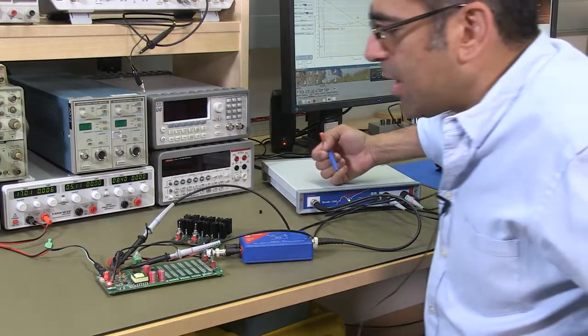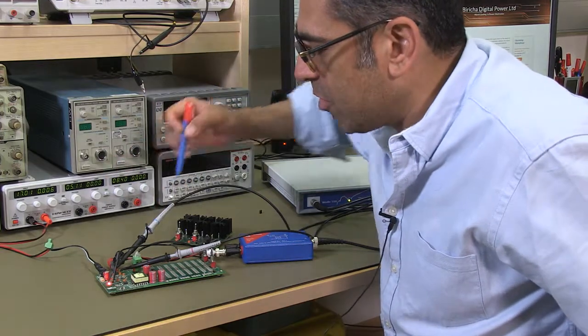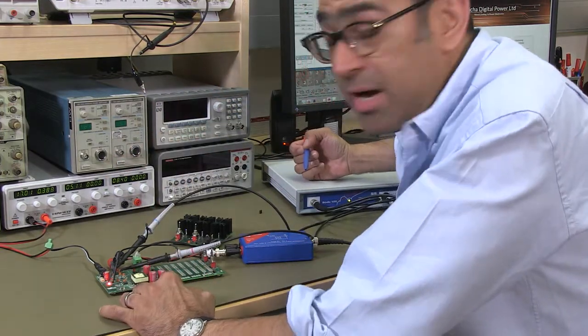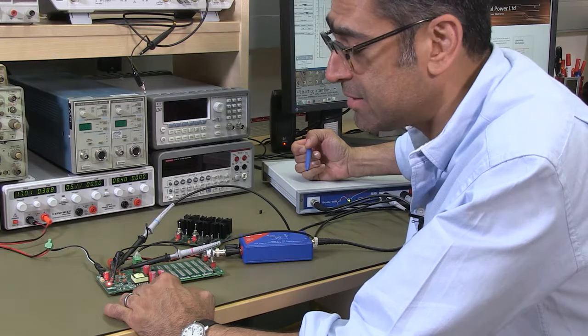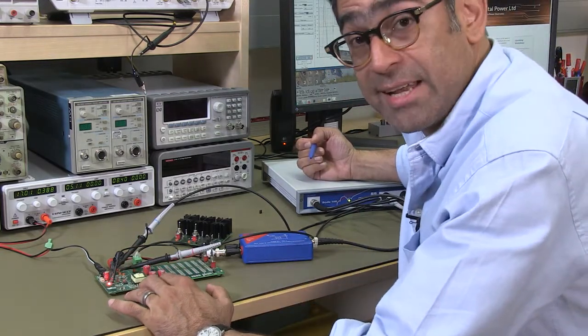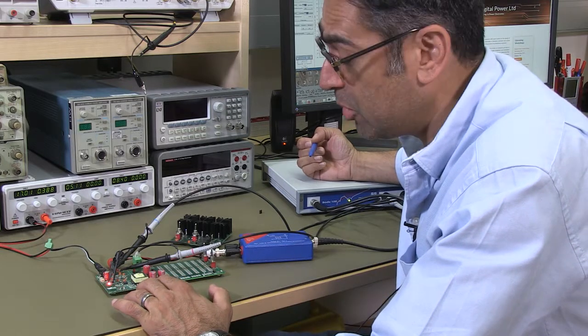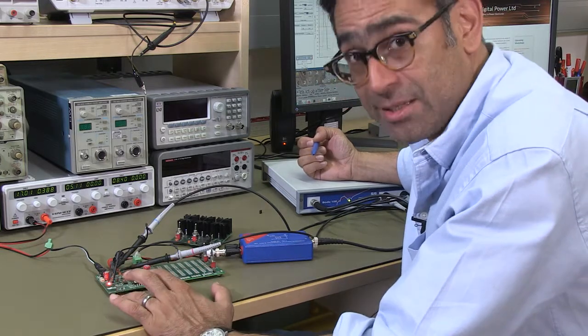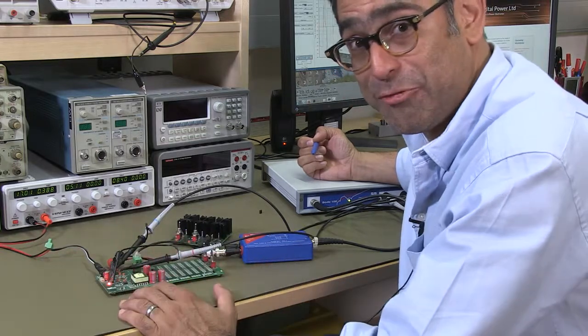So first let's have a look at the setup. Here I have got a flyback bias supply. This one is non-isolated and we use this to teach non-isolated bias supply design in the workshop. We also do isolated power supplies but that is the topic for a different video.